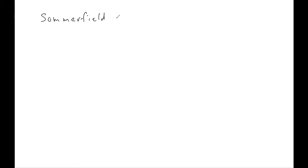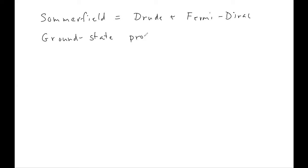Sommerfeld theory really consists of the Drude model plus Fermi-Dirac statistics. We're still going to imagine that we have a free electron gas as we did in the Drude model, but we're going to insist that the electrons obey Fermi-Dirac statistics. We're going to start by computing the ground state properties of the free electron gas.